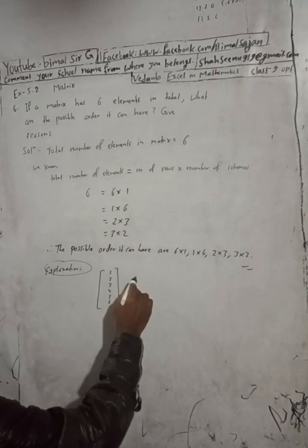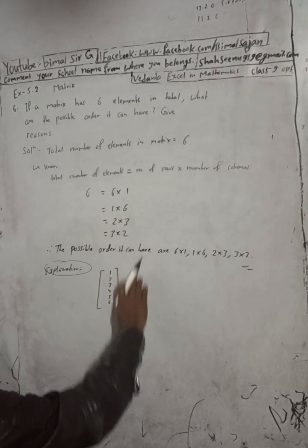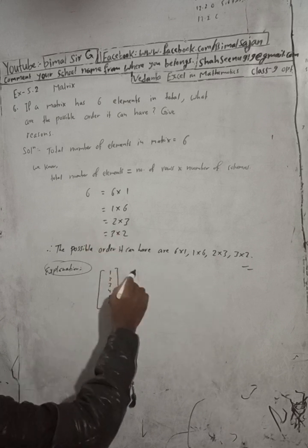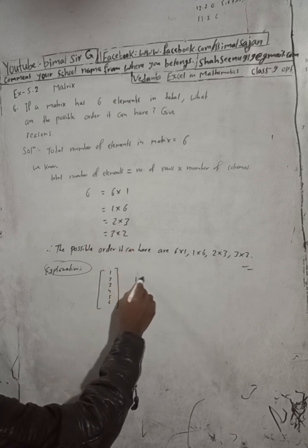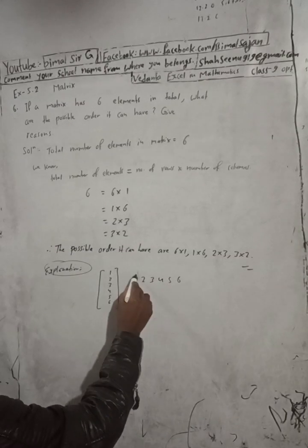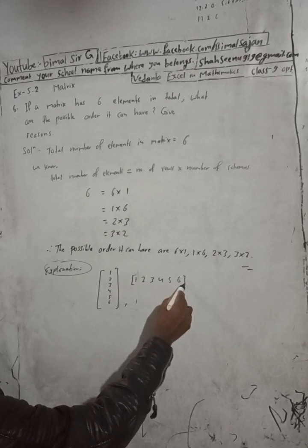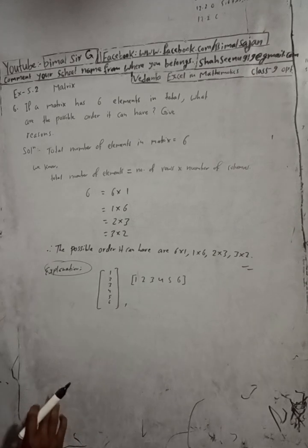For 1 into 6: it has 1 row and 6 columns. The elements 1, 2, 3, 4, 5, 6 are arranged in a single row with 6 columns. This is a row matrix.